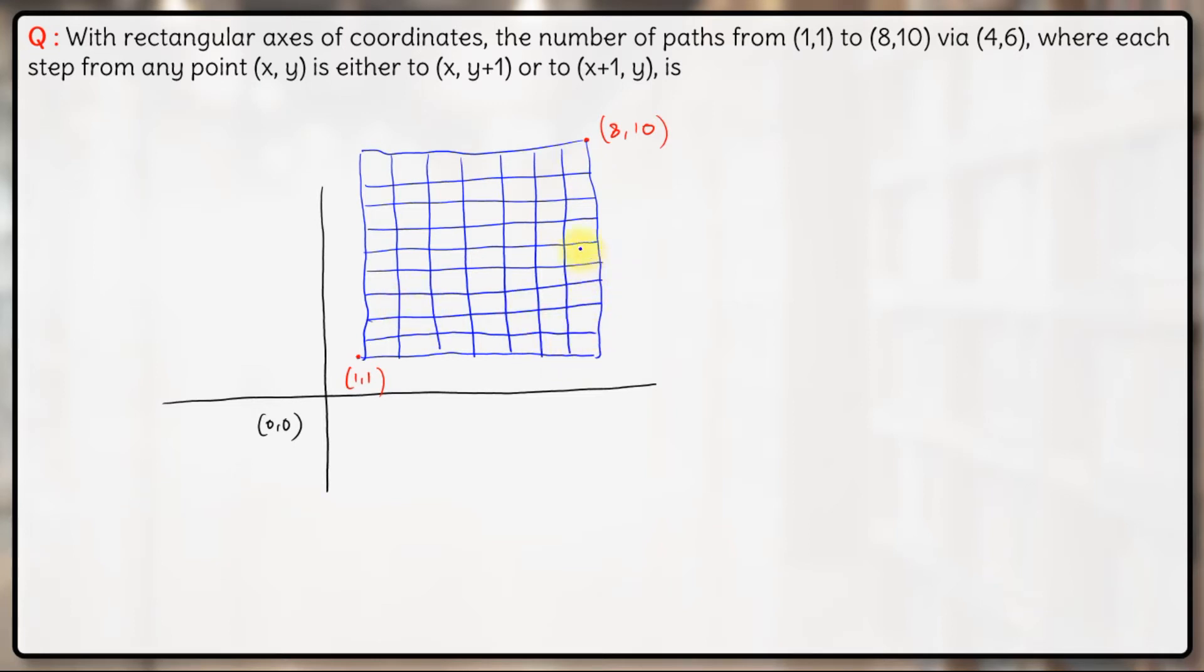1, 2, 3, 4, 5, 6, 7, 8, 9 and 10. Now we have to go from this point here till this point here via (4,6). So which will be the point (4,6)? The x coordinate should be 4, so 1, 2, 3, 4. This is the line that we need to consider. And y coordinate should be 6, so 1, 2, 3, 4, 5, 6. This is the line. So this will be the point (4,6) over here.